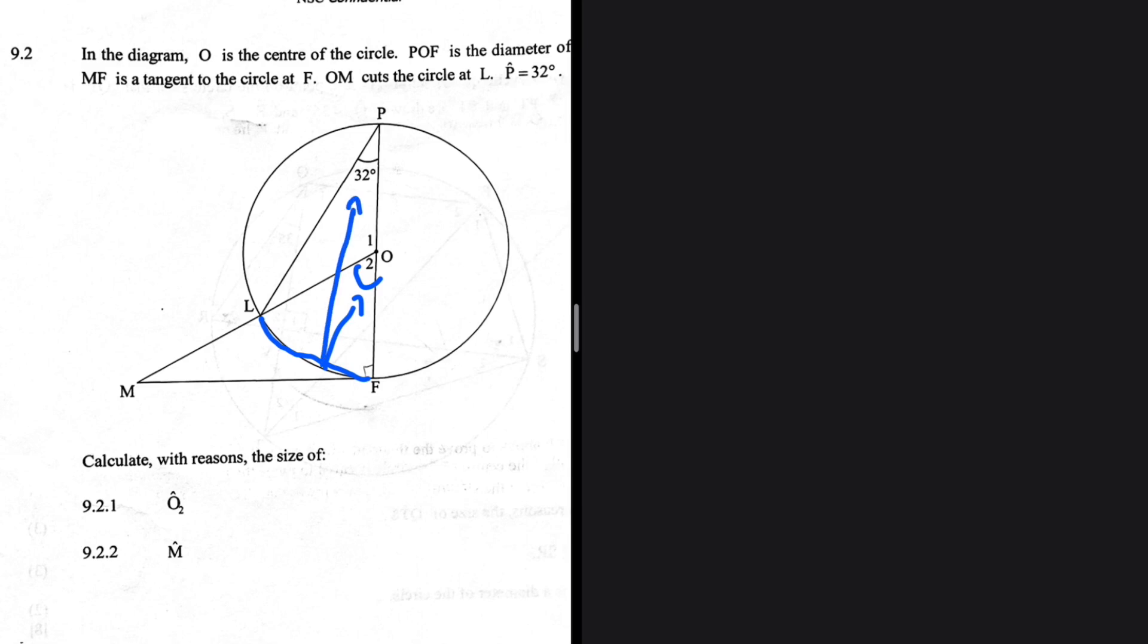Not 32 degrees Celsius, but 32 degrees. This is not chemistry, okay? 9.2.1, we have O2 being equal to twice angle P. The reason being that angle at the center is twice the angle at the circumference if they are subtended by the same chord. So O2 will be 2 multiplied by 32, which is equal to 64 degrees. So that is 9.2.1.